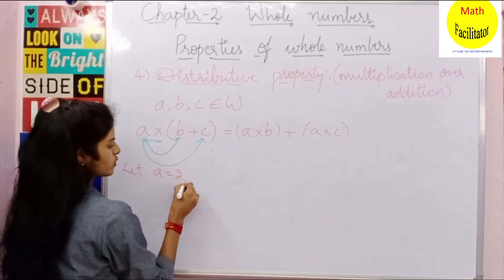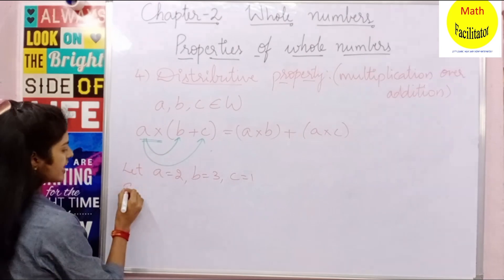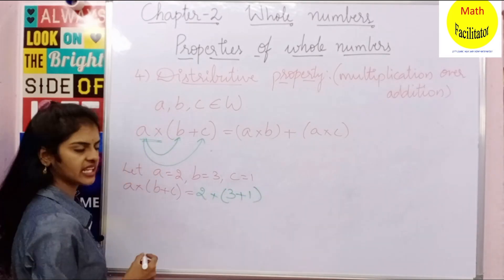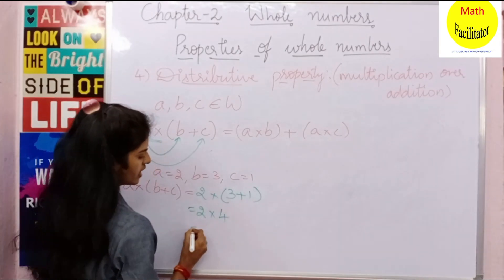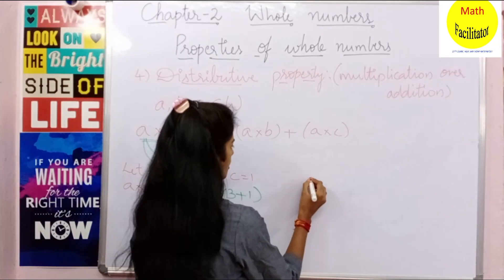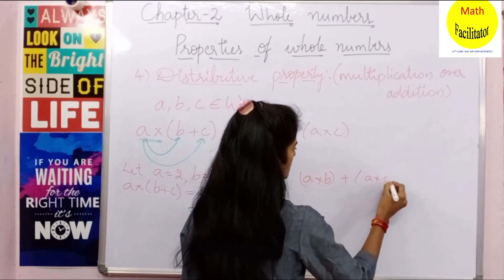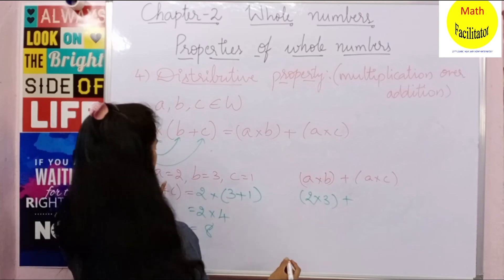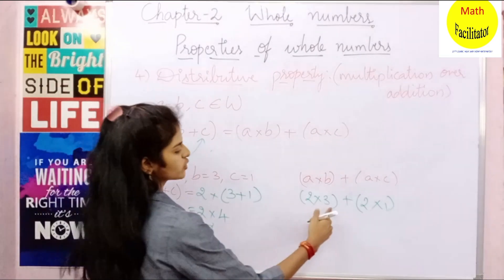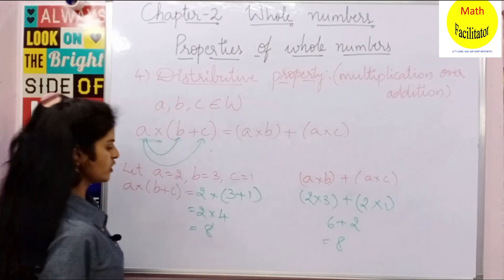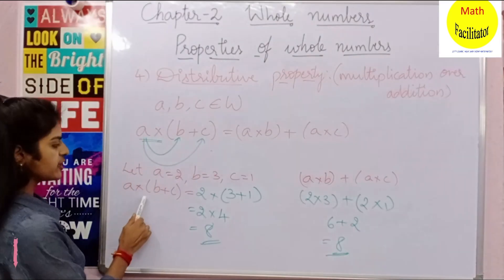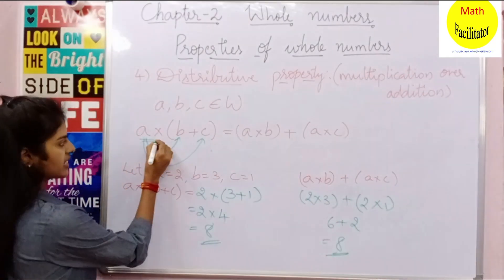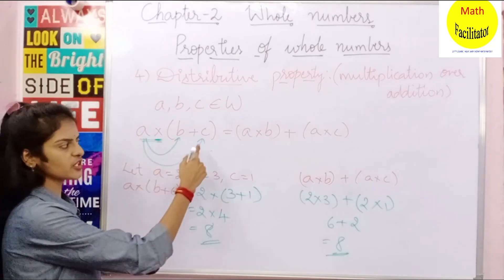Let A equal to 2, B equal to 3, and C equal to 1. Left hand side: A into (B plus C) is 2 into (3 plus 1) which is 2 into 4, so 2 fours are 8. Right hand side: A into B plus A into C is 2 into 3 plus 2 into 1 — 2 threes are 6 plus 2 ones are 2, which is 8. So A into (B plus C) equals A into B plus A into C. This is the distributive property of multiplication over addition.